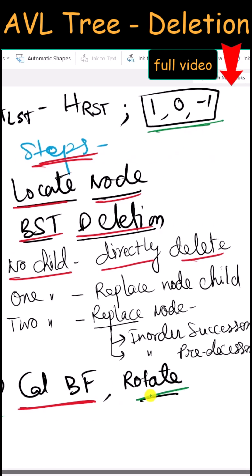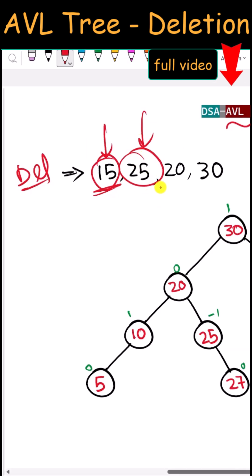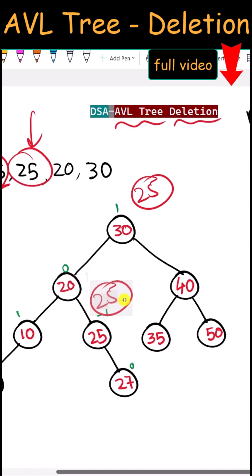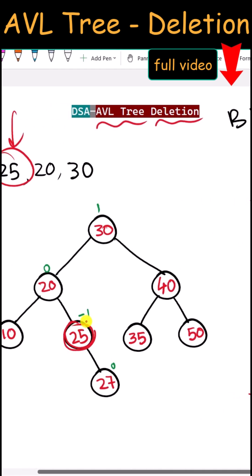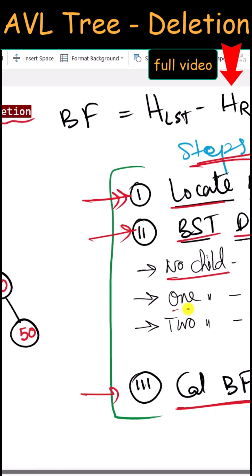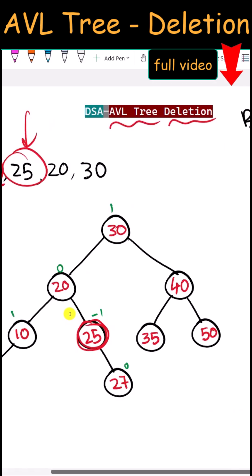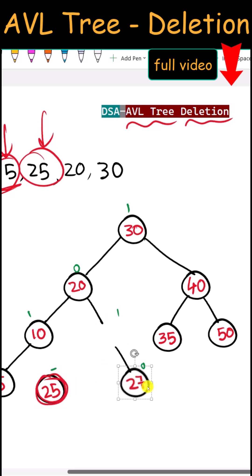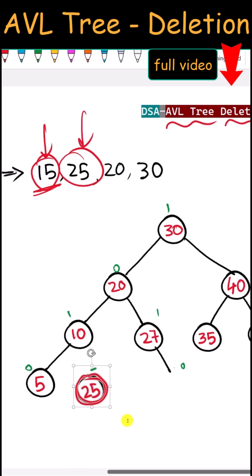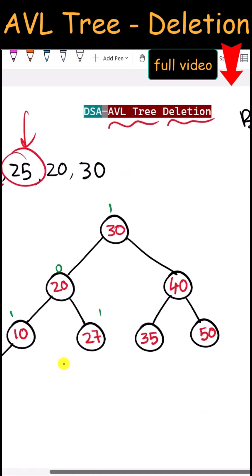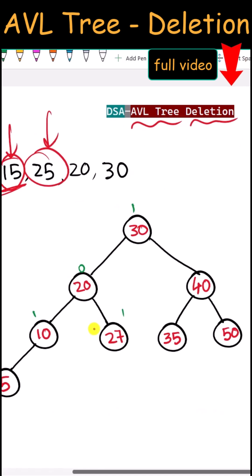Next, we delete node 25. Since 25 is less than 30 and greater than 20, we locate it. This node has one child, so we replace the node with its child — node 25 is replaced with the child node — and then delete that node.